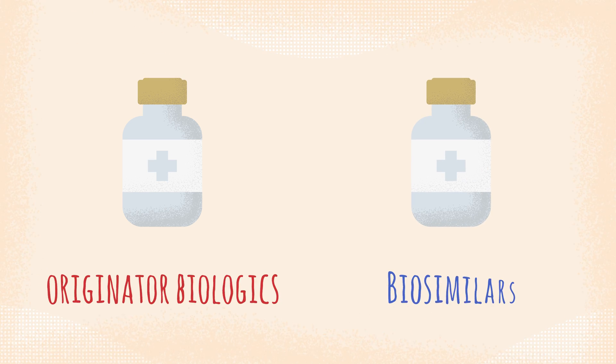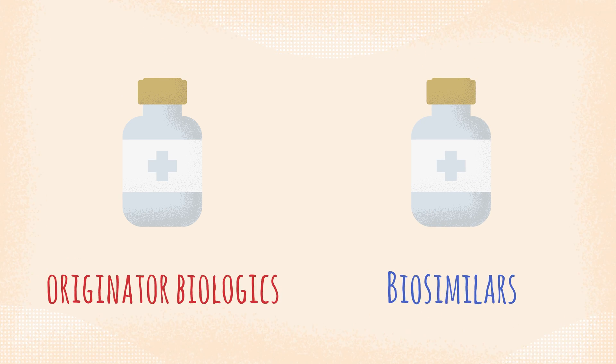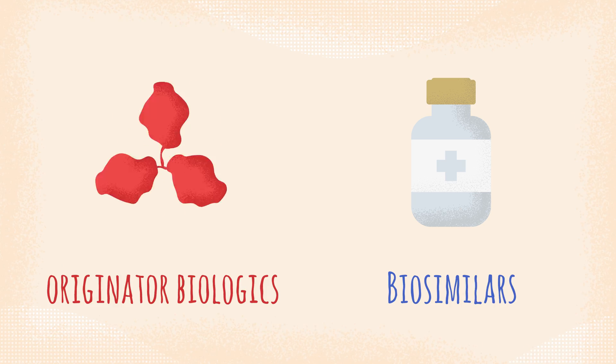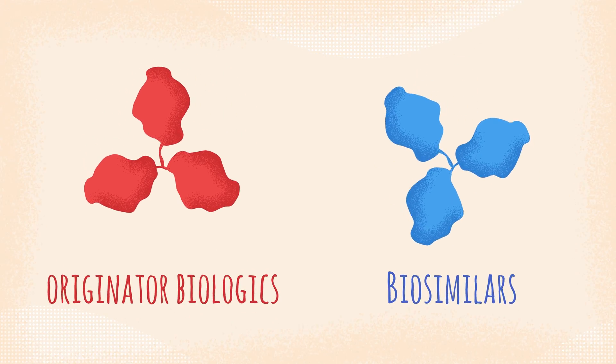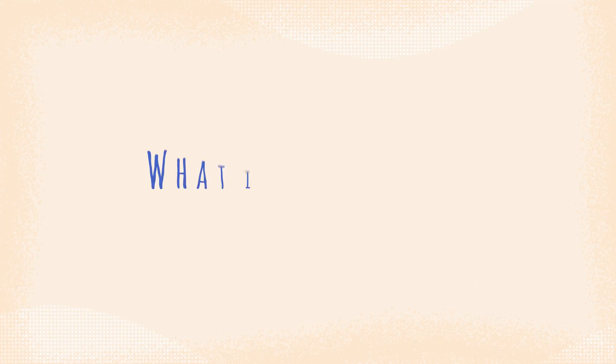Two key types of medicines that are currently prescribed for arthritis in Ireland are Originator Biologics and Biosimilars. What is a biologic?